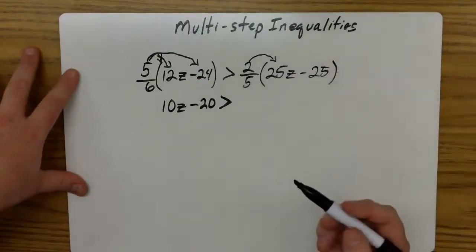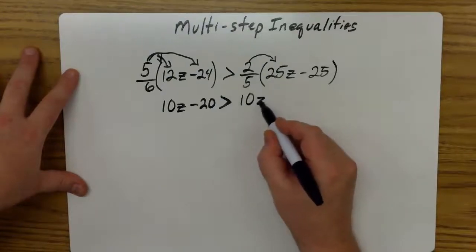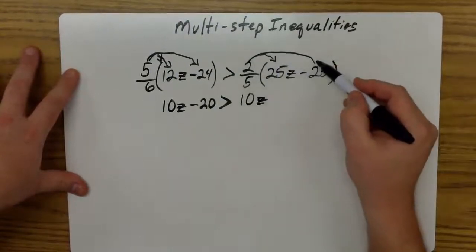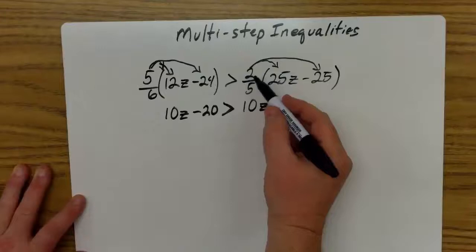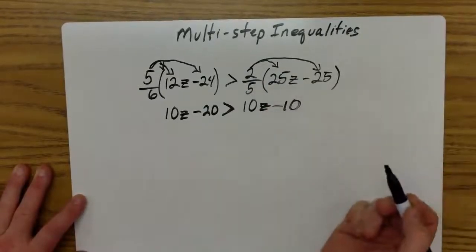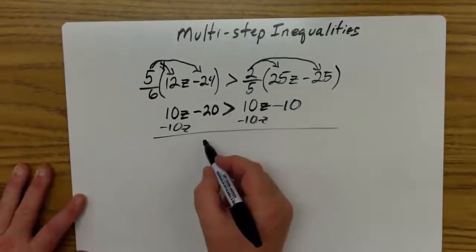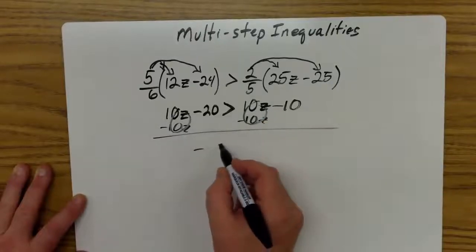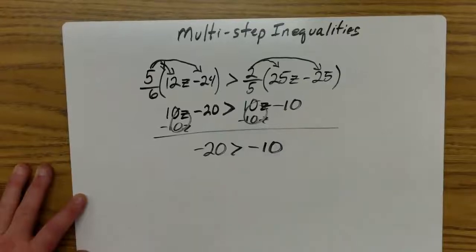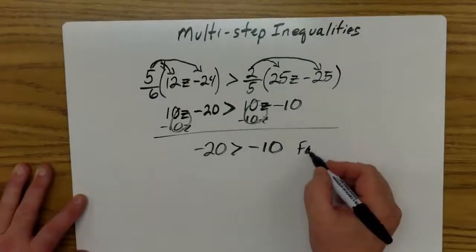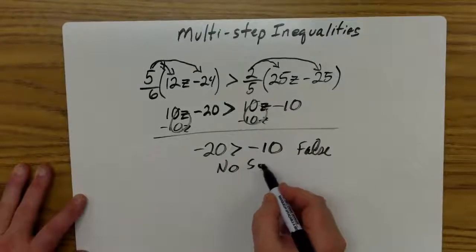So I have 10z - 20 > 10z - 10. Combine my z's all to one side. Minus 10z, minus 10z. And what I have left over, this is 0, this is 0, is -20 is greater than -10. Now this statement here is false. -20 is not greater than -10, and so we would say that this has no solution.